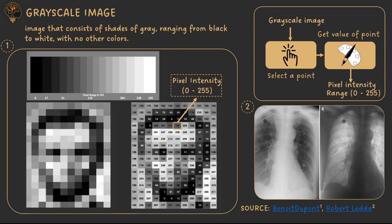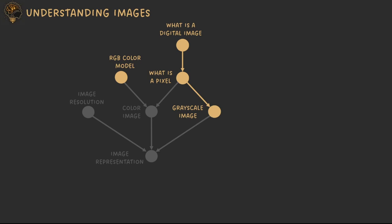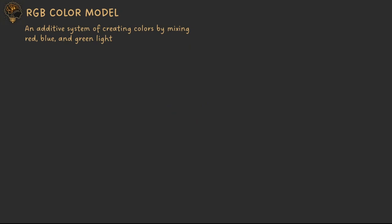Moving on to the RGB color model — before talking about color images, let's see how we represent colors. An RGB model is an additive system of creating colors by mixing three primary colors: red, green, and blue. This is one of the most popular color models. There are others like HSV, but we'll only cover HSV if a specific activity requires it.